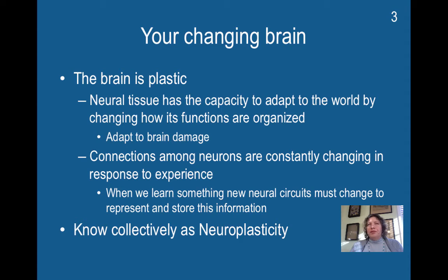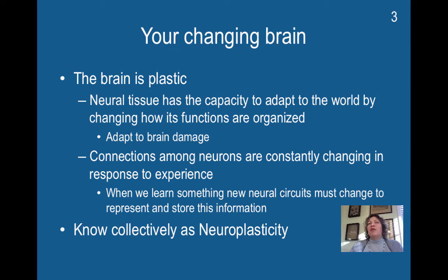This would be the same thing as if you tended to depend on one part of your body when the other one was damaged. So even if you're right-handed, you're going to use your left hand more if you have an injury to your right hand. The other aspect of plasticity is that connections among your neurons are constantly changing in response to experience. Most people don't realize that when you learn a new piece of information, your brain changes. At a physical level, new neural circuits must change to represent this new stored information. Each time you get a little bit of information, even about this course, your brain is going through a small physical shift to accommodate and include that new information in its vast organization. This ability of the brain to adapt and to change as a function of experience is collectively known as neuroplasticity, and it's really, really important.